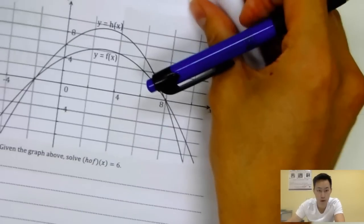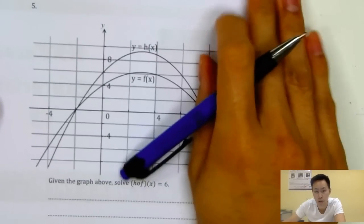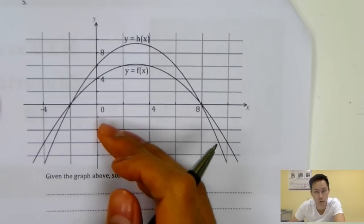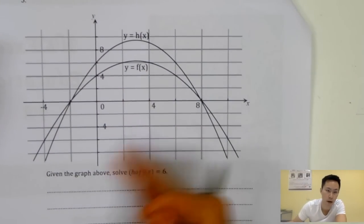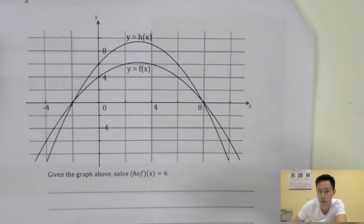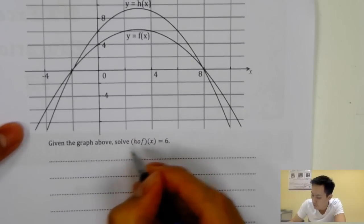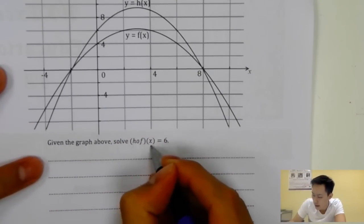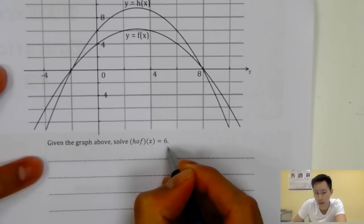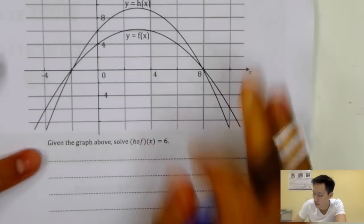The first question will be on functions — specifically on the graph. Most students find this kind of confusing. Given the graph, solve H of f(x) equal to six. So how do you solve this?